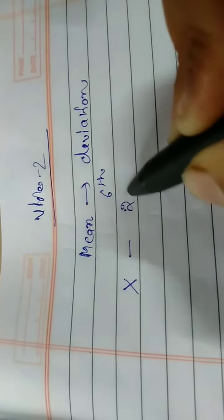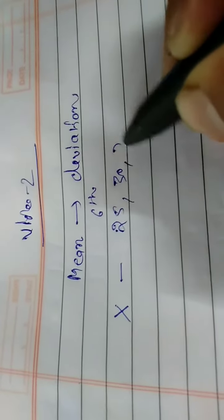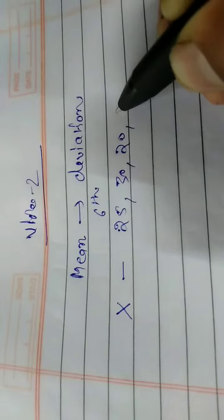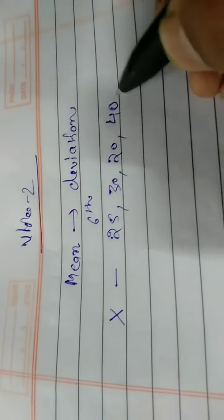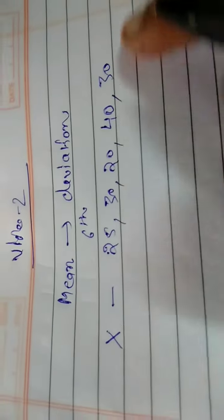One of the girls is 25 kg, one is 30 kg, another is 20 kg, one is 40 kg, and one is 30 kg. So these are the 5 girls' weights.